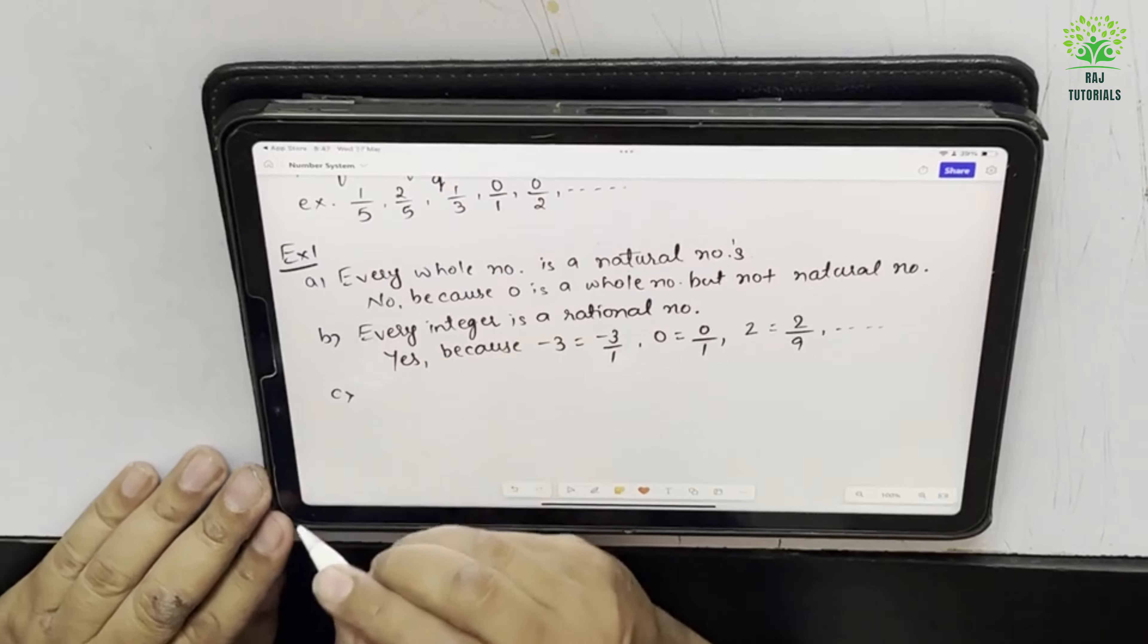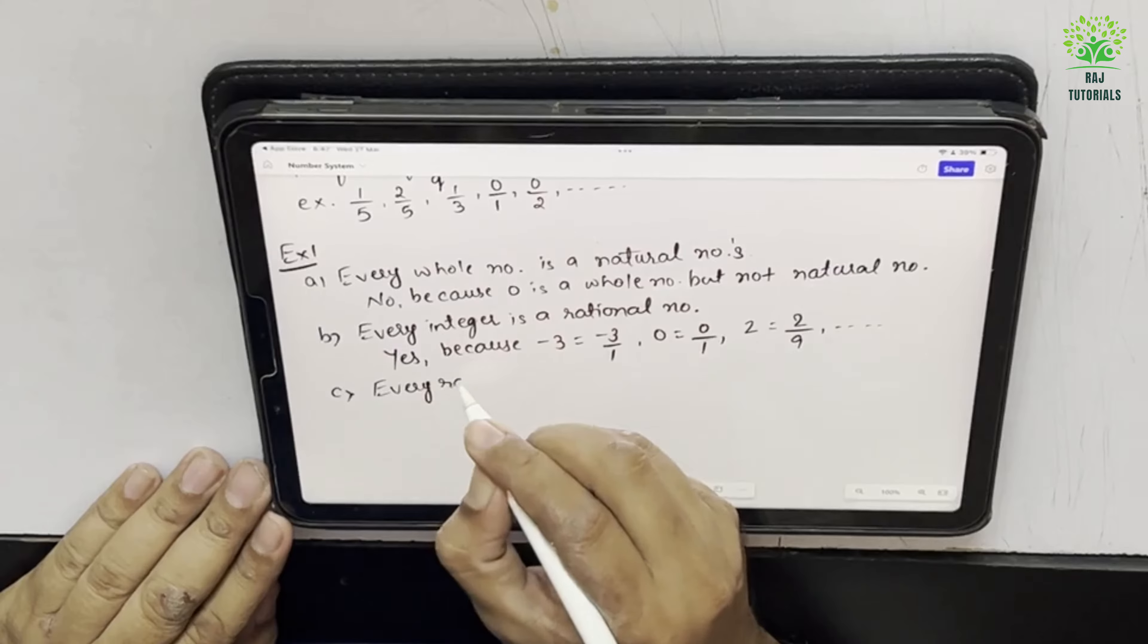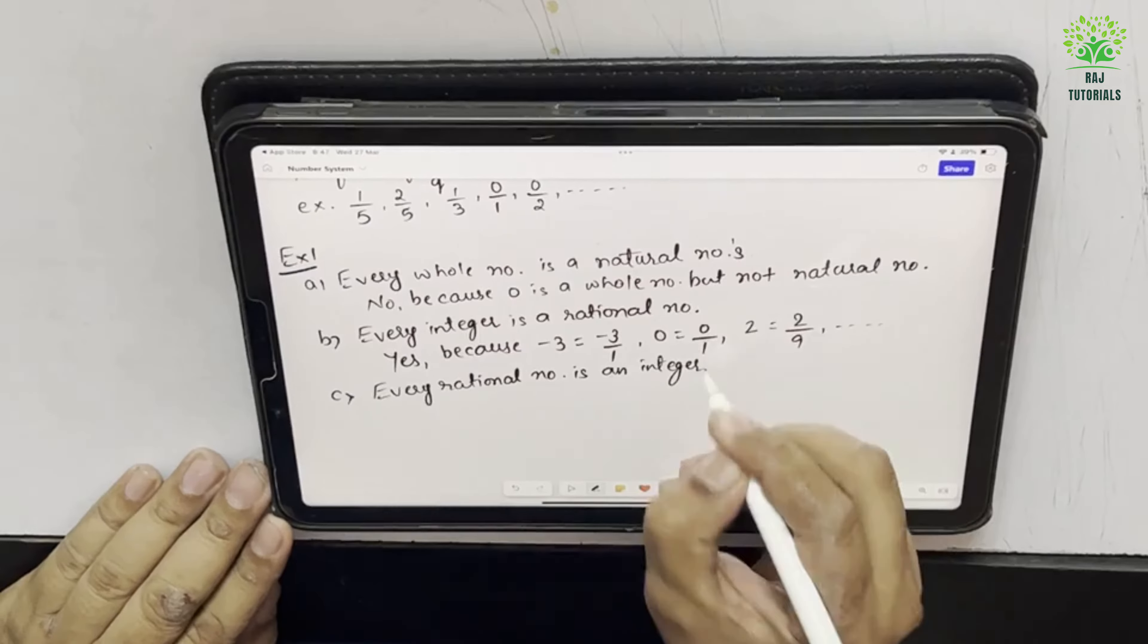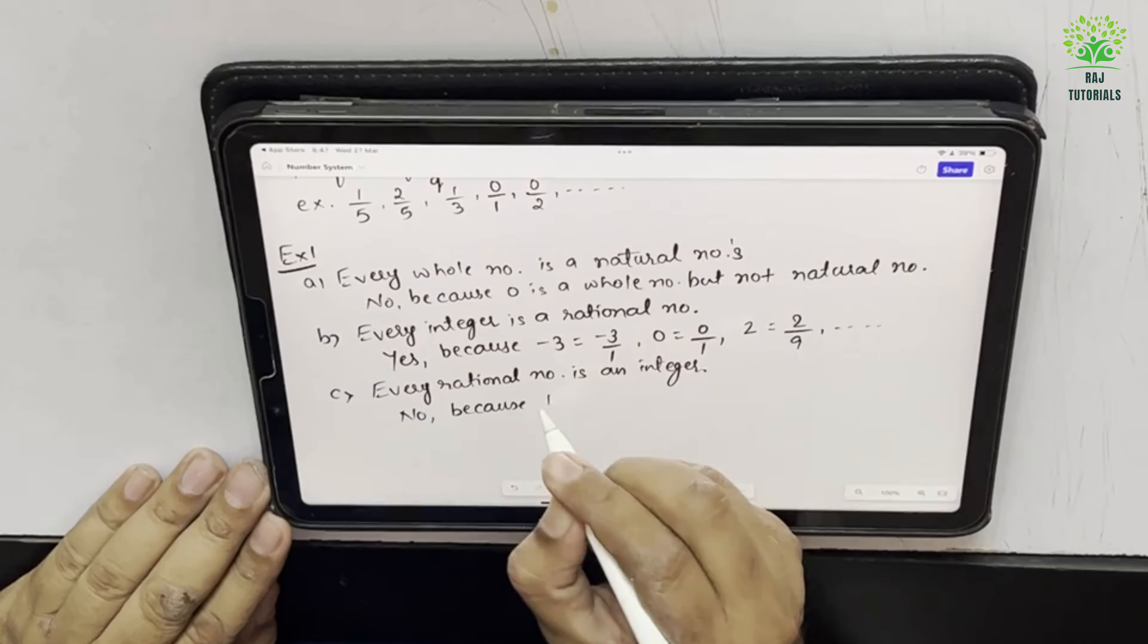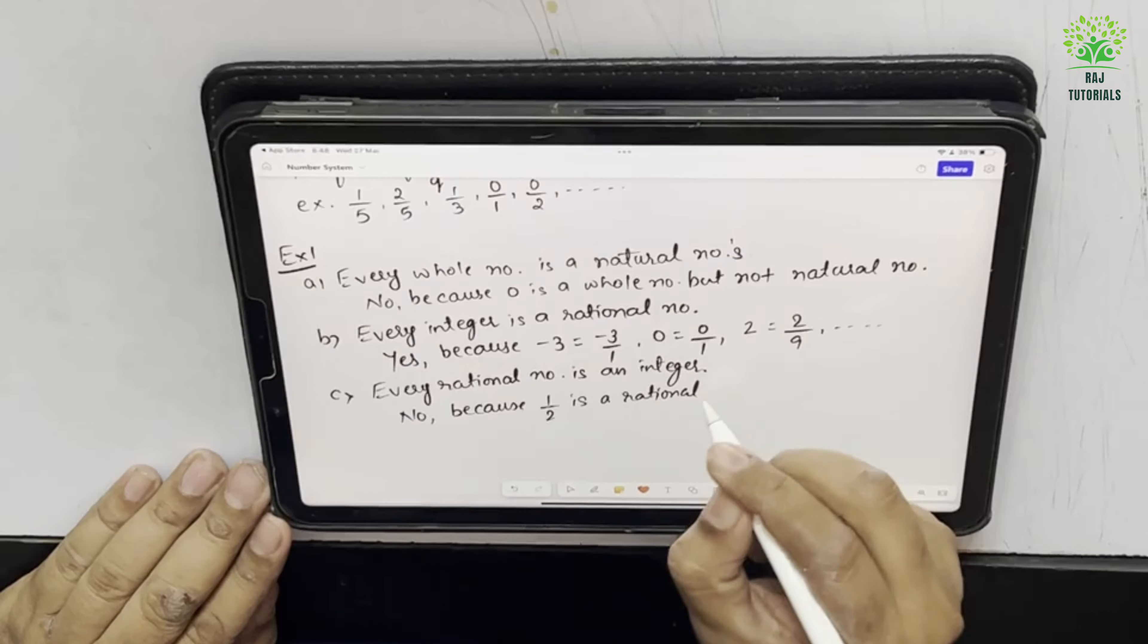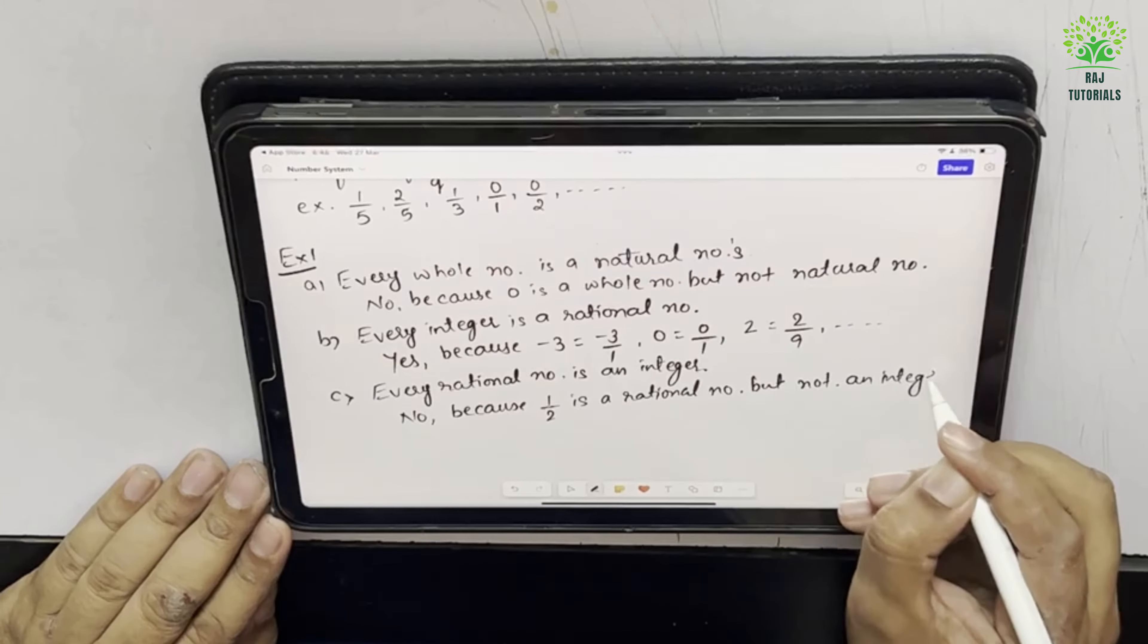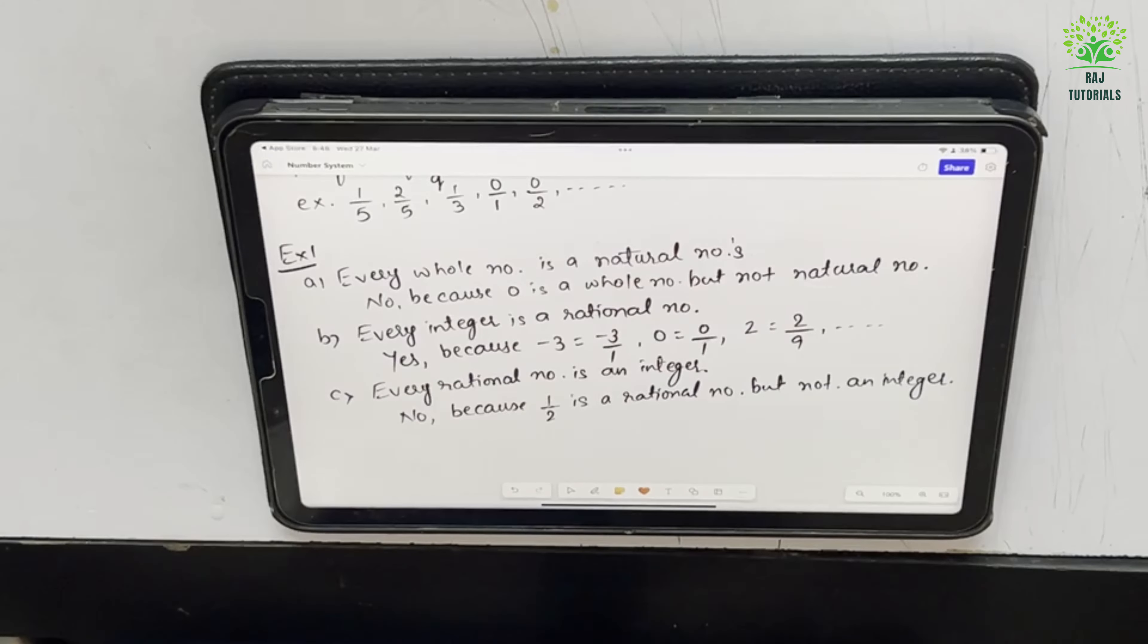Now the C says every rational number is an integer. So here the answer would be no because 1 by 2 is a rational number but not an integer. Why it is not an integer? Because it is not a full number. So it is not an integer.